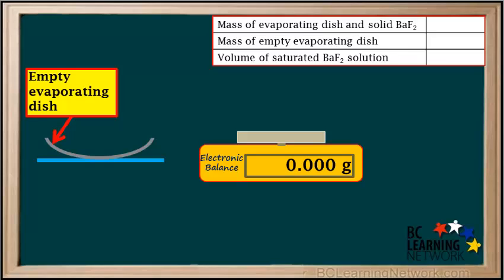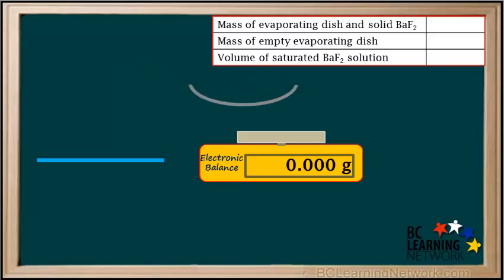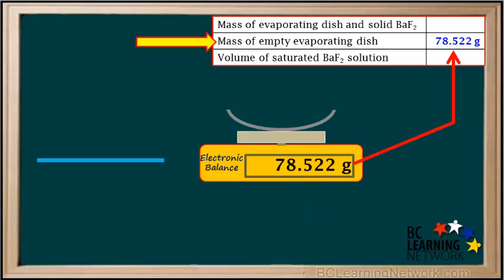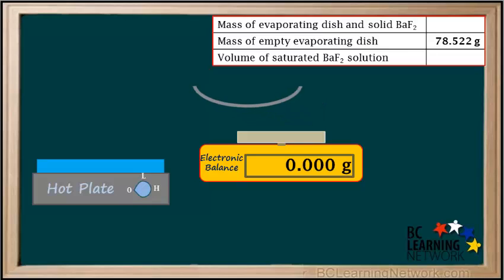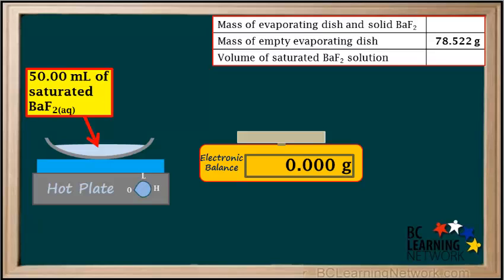We'll illustrate a little experiment. We start with an empty evaporating dish and place it on an electronic balance, which reads 78.522 grams. We record that in the data table for the mass of the empty evaporating dish. We then carefully measure 50 milliliters of saturated BaF₂ solution and add it to the evaporating dish, making sure the sample has no undissolved solid in it.